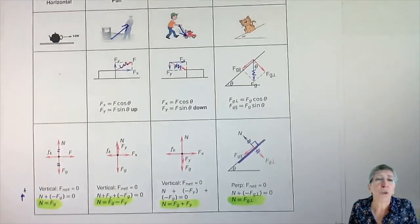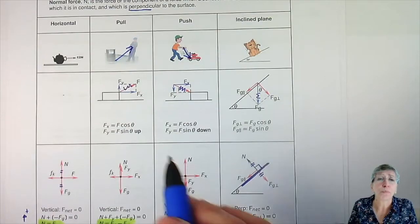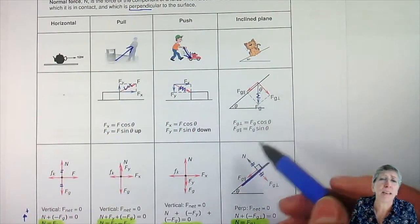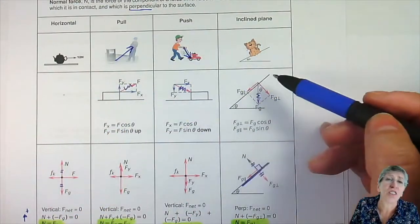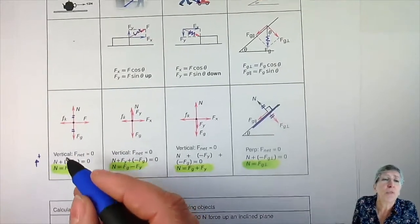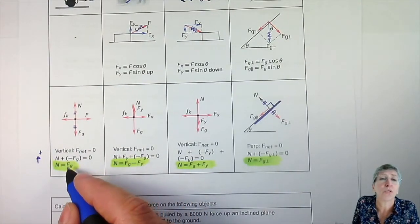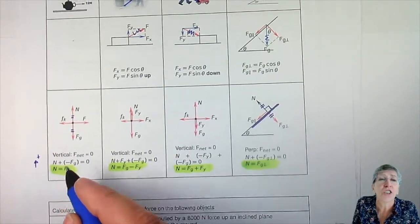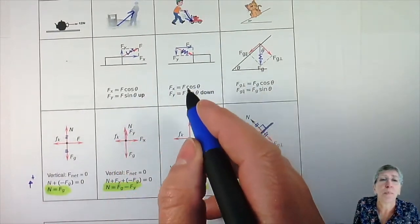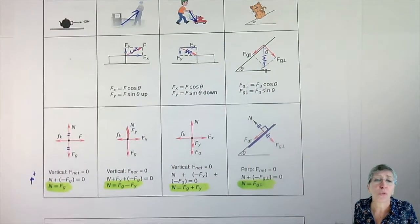So there you've got the four ways that you can work out the normal force. There might be others, but this is the basic situation that you can get. Just remember that the normal force is not always equal to gravity - just check to see if there's a Y component helping or hindering the normal force.